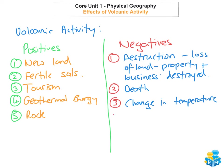The fourth negative impact of volcanic activity would be the volcanic gases that are released into the atmosphere. An example of this would be carbon dioxide. In 1986, in Lake Nyos in Cameroon, 1,700 people were killed because of the gases that were released into the atmosphere.